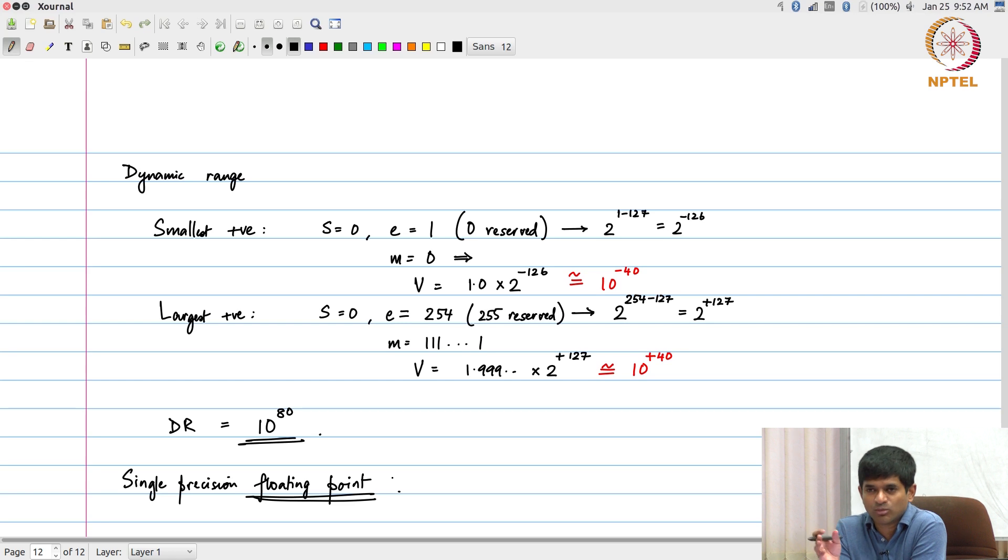In fixed point, the name itself suggests the decimal point location has been fixed by convention. I just say 4 dot 4 and that is it, you cannot really move it anywhere. Whereas floating point, every number carries its own exponent with it.